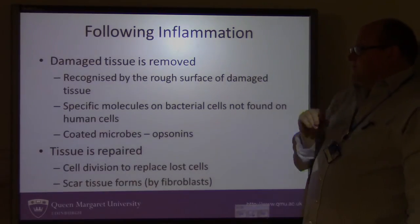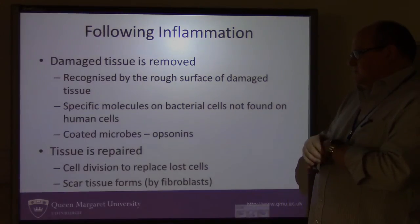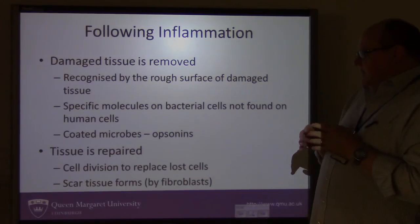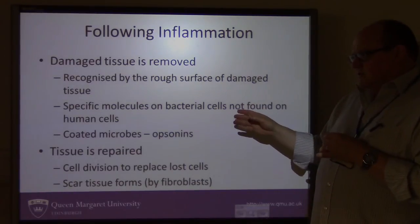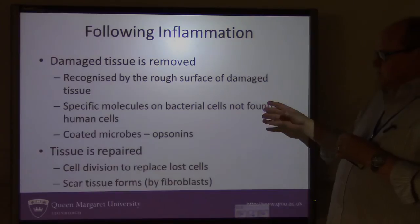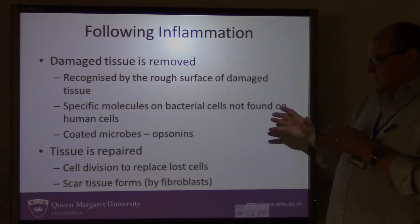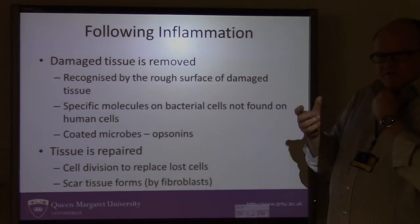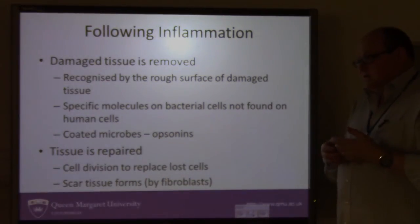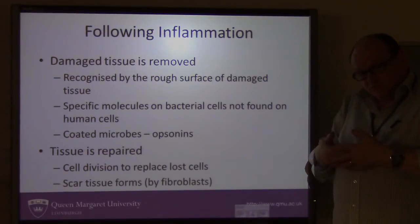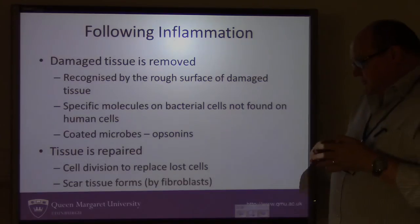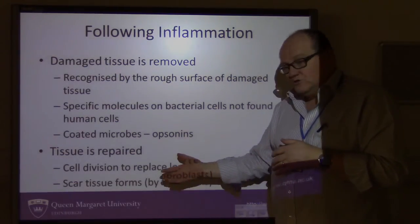Once the inflammation is over, the dead and damaged tissue has to be removed. The damaged tissue is recognised by having a rough surface, and there are specific molecules on bacterial cells not found in human cells. Coated microbes called opsonins are part of the signalling indicating damaged tissue is present. Tissue repair then takes place through cell division — more cells are produced, and you get the formation of new tissue in the damaged area, which is responsible for new tissue growth and also scar tissue.